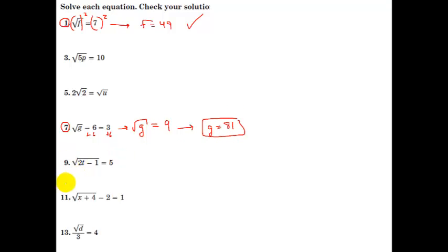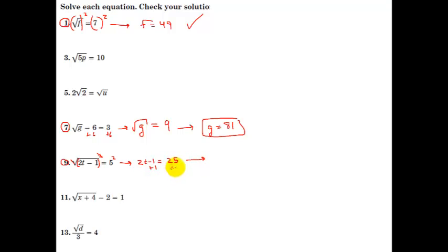Let's try number 9. For this one, you do have the square root already isolated by itself. So, even though there's a multiplication and subtraction, because they're inside the radical, it's kind of like there are parentheses there even though you don't see them. So, the first thing to do is to square both sides — that cancels the radical — and then we have 2t minus 1 equals 5 squared, which is 25. If we add 1 to both sides, that gives us 26, so we have 2t equals 26. Then, if we divide both sides by 2, we get t equals 13.